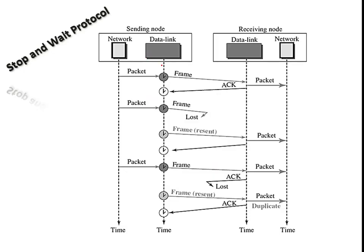This flow diagram explains how the stop-and-wait protocol works between sender and receiver. The sender has a ready state and a blocking state; the receiver is shown separately. In the first step, a packet is received from the network layer. The event occurs — packet received — and the action is to send the frame. At the receiver side, if the packet is received without any corruption, it immediately sends an acknowledgement. If the acknowledgement arrives before the timer expires, the sender sends the next data.